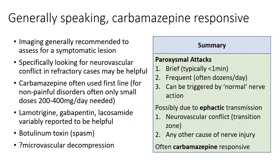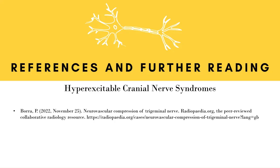In summary, all of these episodes are brief — usually less than a minute — often frequent, happening dozens of times per day, and they can be triggered by whatever that affected nerve would normally do: eye movement, yawning, et cetera, depending on which nerve is involved. They're probably driven by ephaptic transmission, more likely at a point of neurovascular conflict in the transition zone, or any other cause of nerve injury at that point, and they often respond to carbamazepine.